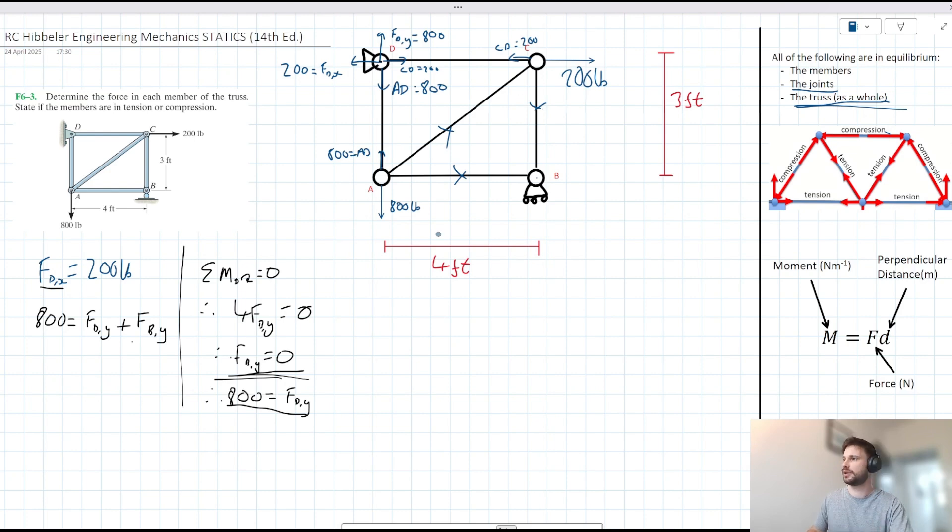So we've solved the problem. There's only one thing left to say here, which is whether the members are in tension or compression. So the only members that have internal forces here are AD and CD. So let's just say AD is in tension. And CD is also in tension. So those are the solutions to this problem here. If you have any questions or comments, please feel free to leave it down in the comment section down below. Otherwise, thank you very much for watching.